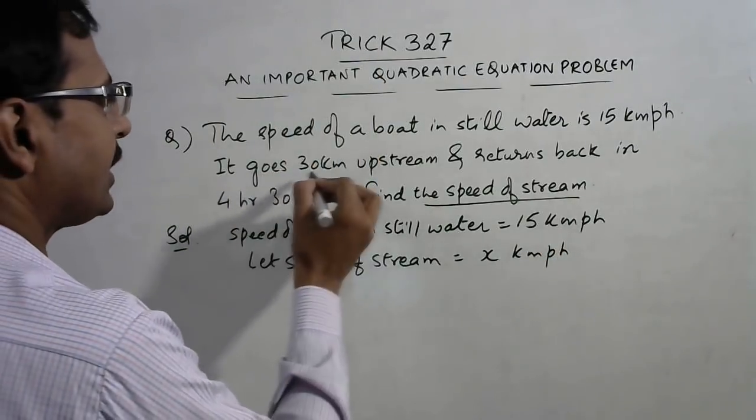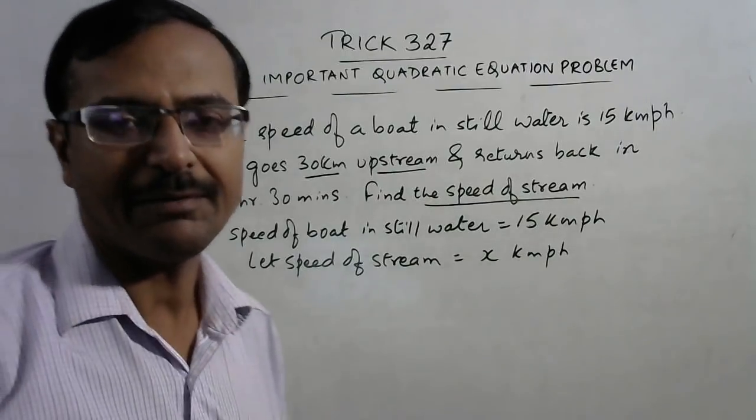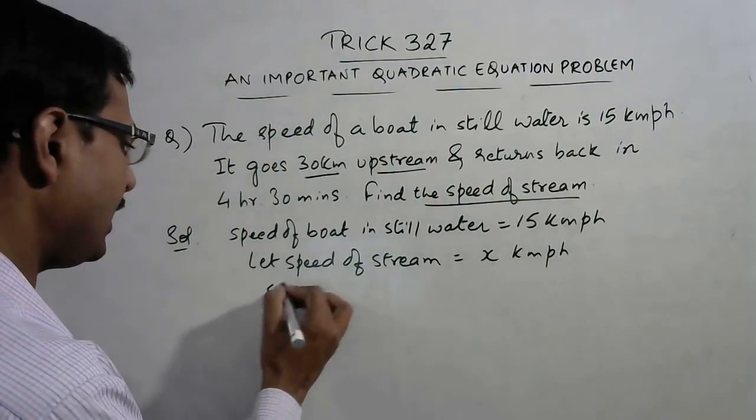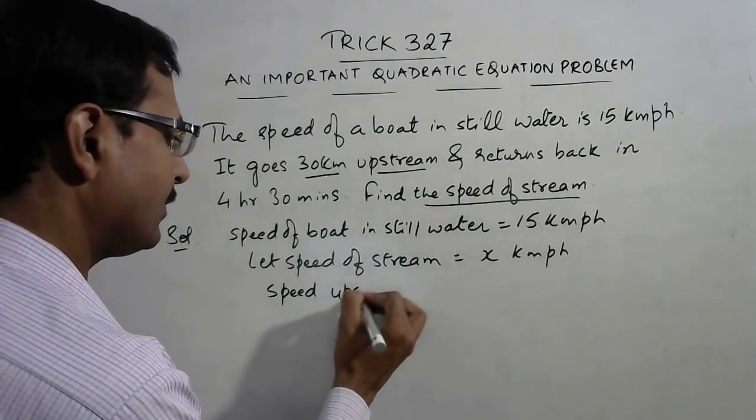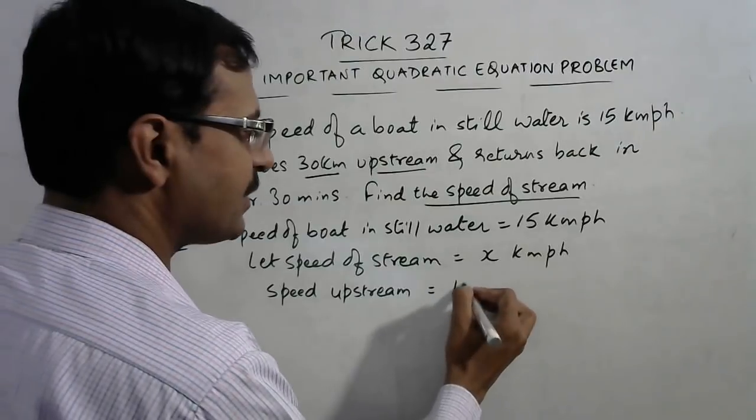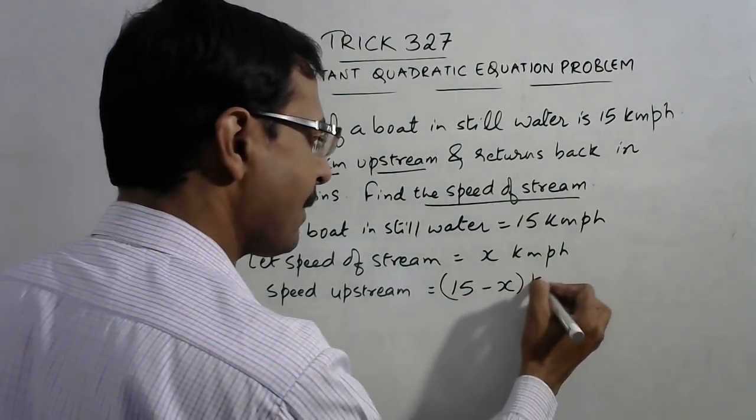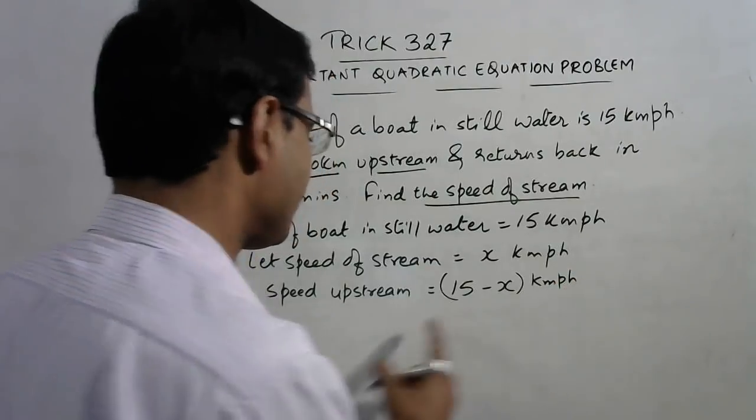Now it goes 30 km upstream. In upstream motion, whenever you need to find the speed of boat upstream, we need to subtract the speed of boat and the speed of stream. This will give us the speed of boat when it is moving upstream.